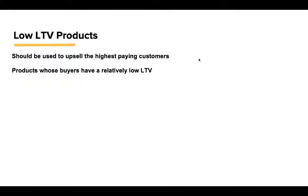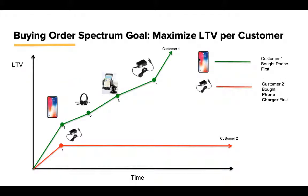Low lifetime value products should be used to upsell the highest paying customers once acquired. Think of a phone charger: I only use one if I have an iPhone. Customer one bought the iPhone first — the green line — and customer two bought the phone charger first — the red line. A phone is a very high lifetime value product; not only is it more expensive, but once purchased it triggers other purchases like headphones, car holders, and accessories. If you just buy the phone charger first, that's maybe five bucks and then the person leaves forever. Clearly, the lifetime value of customer one is much higher than customer two.